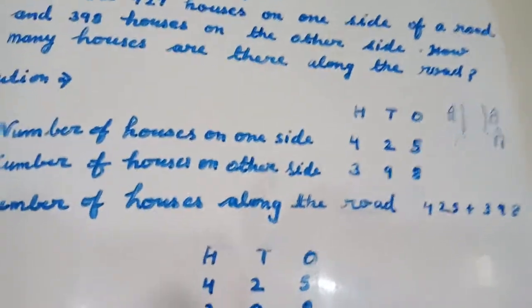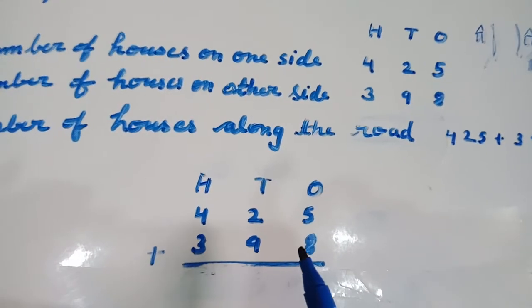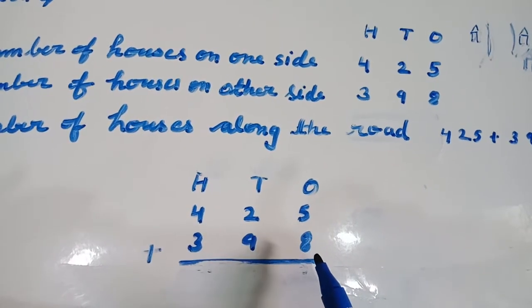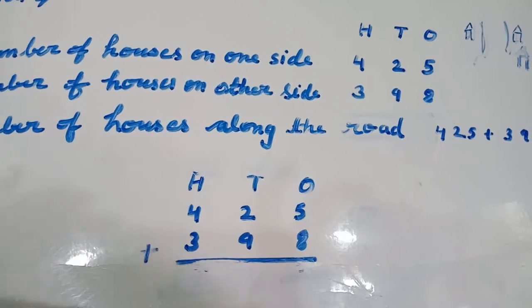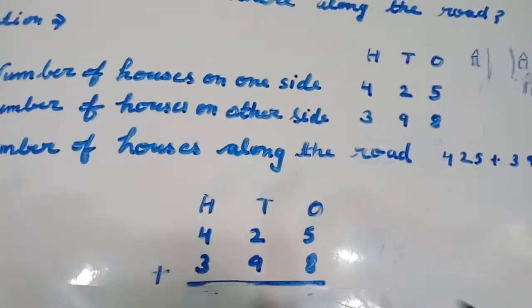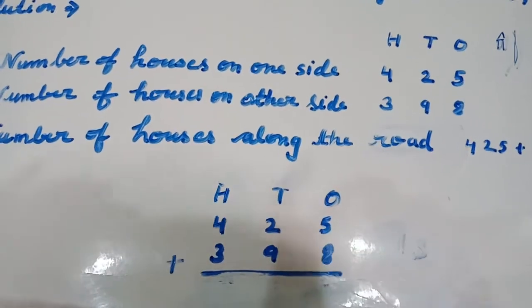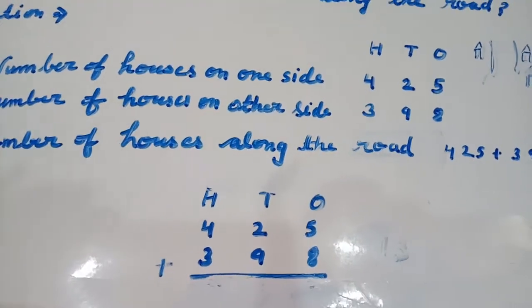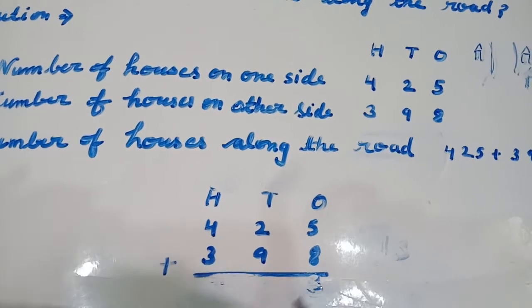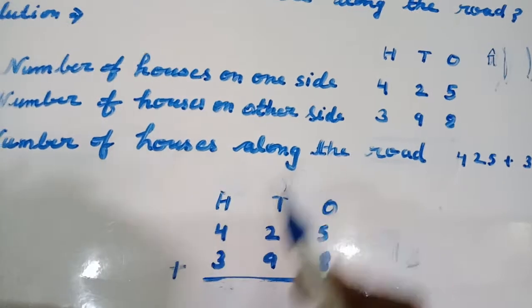So, let's add. 5 ones plus 8 ones. How many ones? 8 plus 5 equals to 13. So we will write 3 here and 1 carryover.